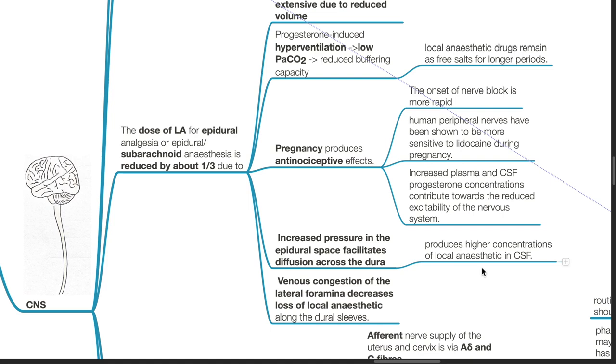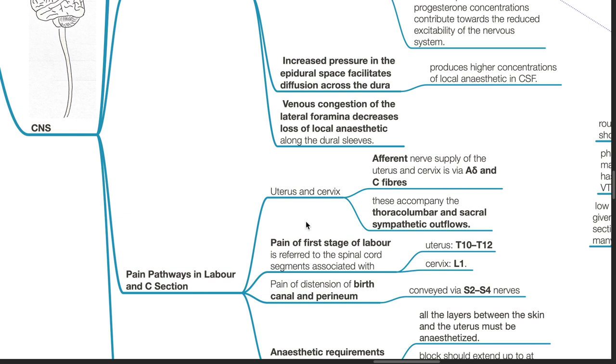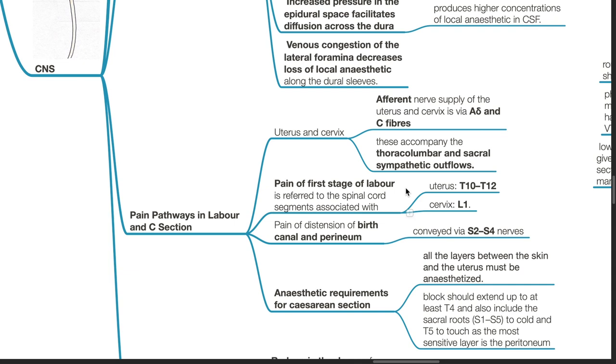Pain pathways in labor and cesarean section: The afferent nerve supply of the uterus and cervix is via A-delta and C fibers accompanying the thoracolumbar and sacral sympathetic outflows. Pain of first stage labor is referred to spinal cord segments T10 to T12 for uterus and L1 for cervix. Pain of distension of birth canal and perineum is conveyed via S2 to S4 nerves.